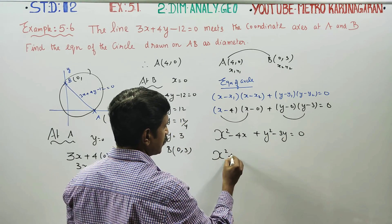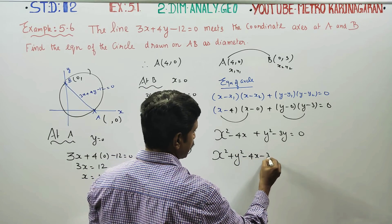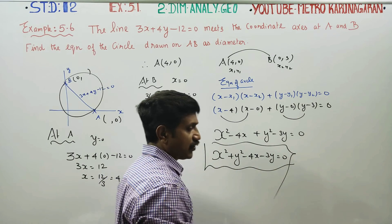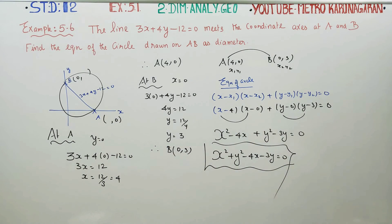Rearranging: x² + y² - 4x - 3y = 0 is the required equation of the circle. Thank you.